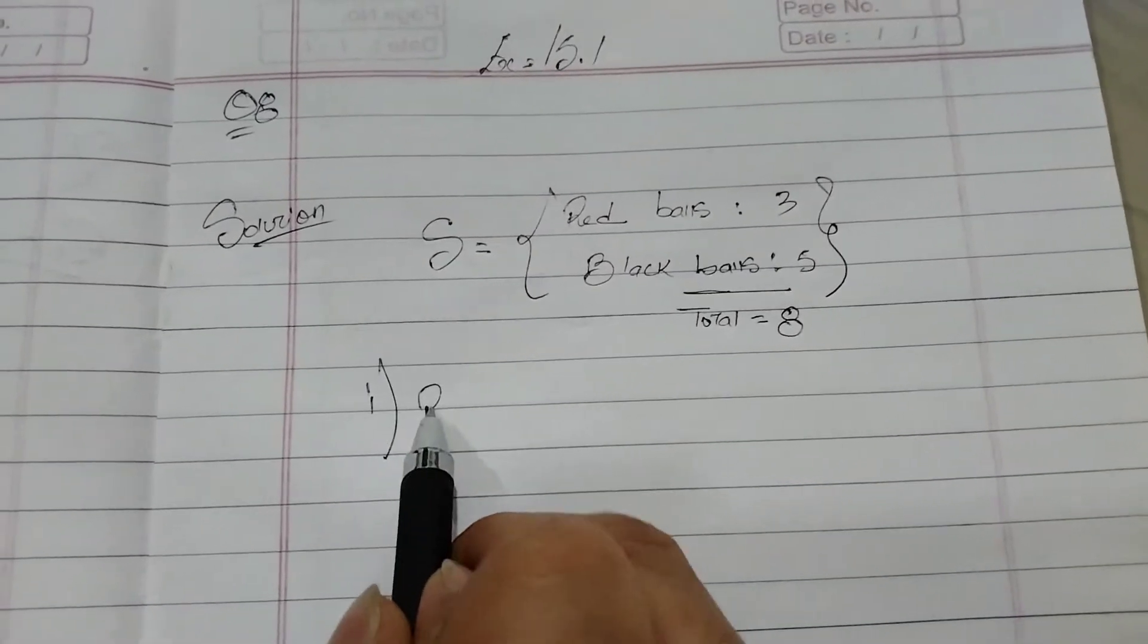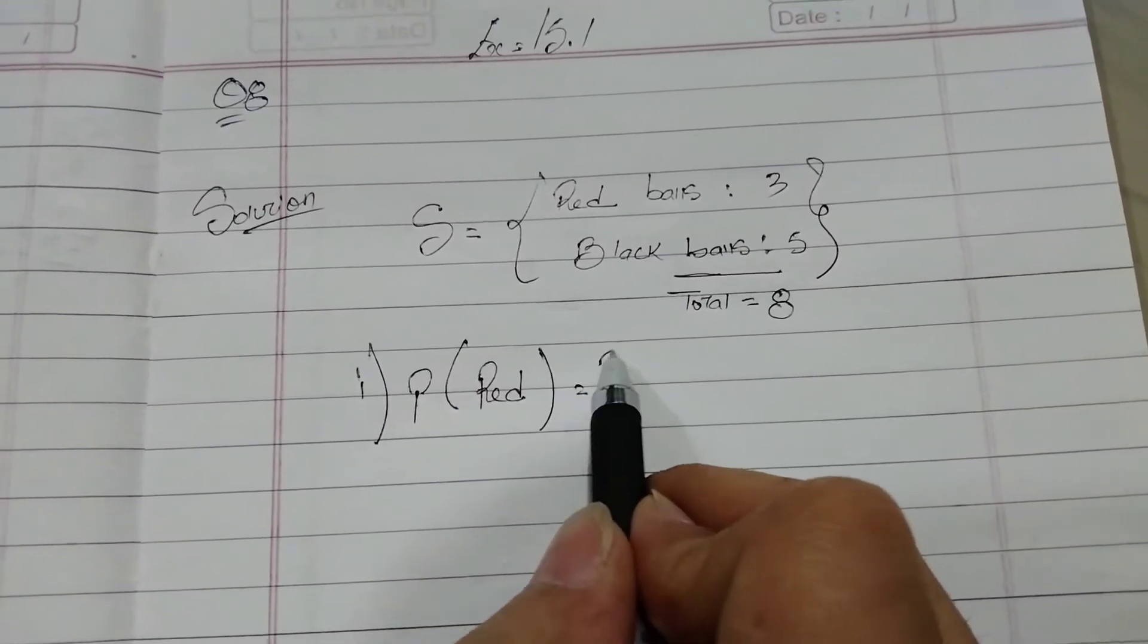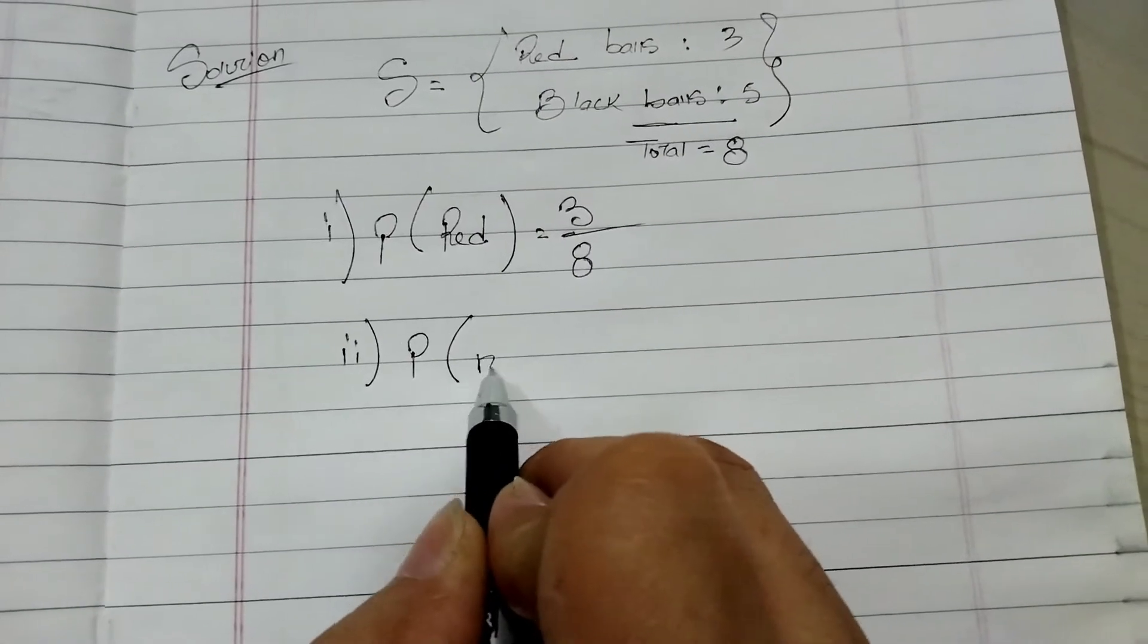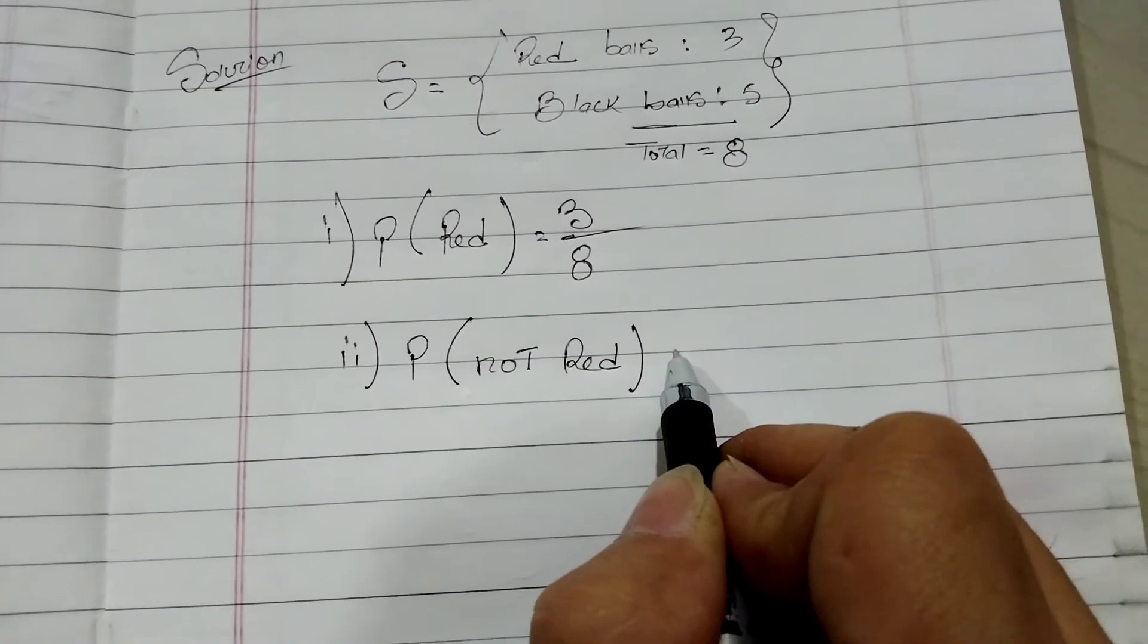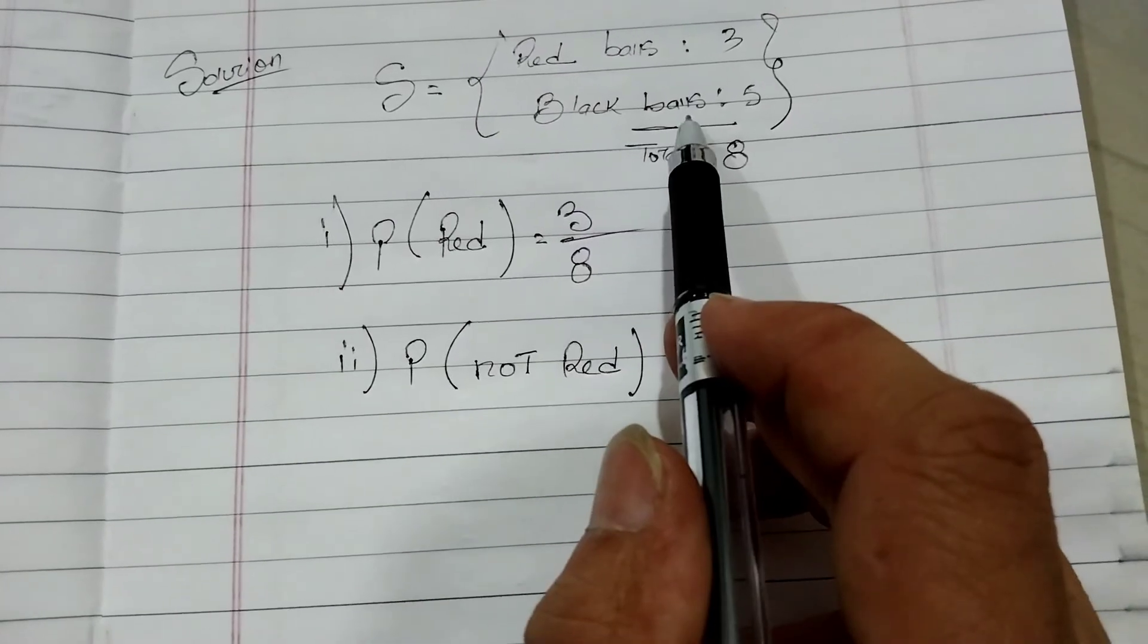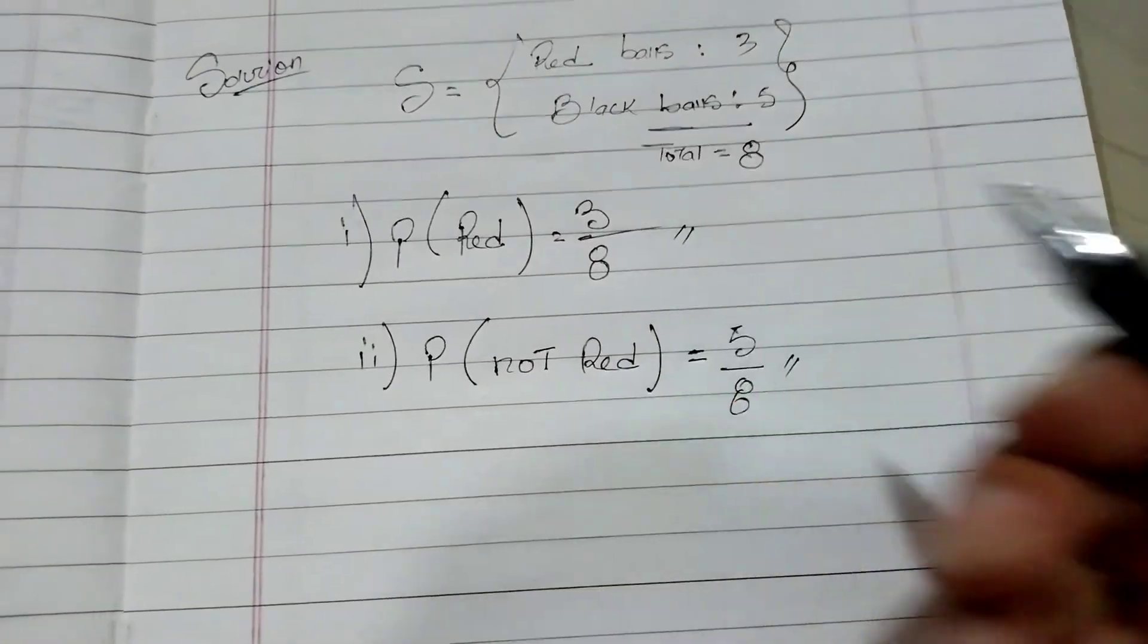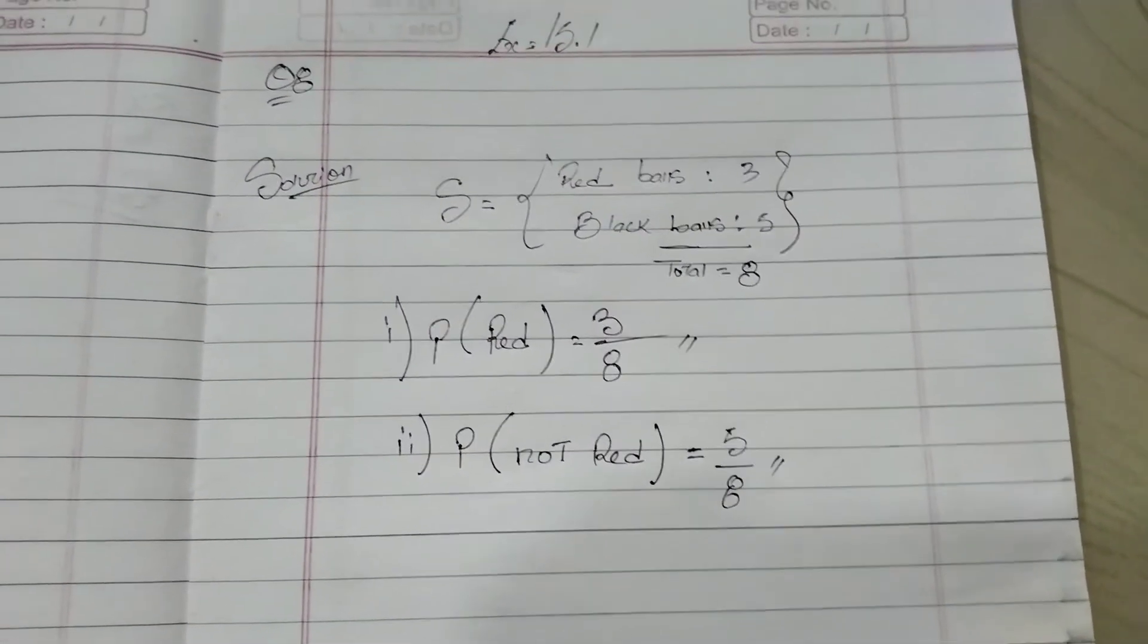Number one: probability of red is 3 out of 8. Next, probability of not red. Remember, this 'not red' means we're not talking about red, but about not red, so the not red is black balls. So that's 5 by 8. Finished. So with this we have completed 15.1, question number 8. Thank you.